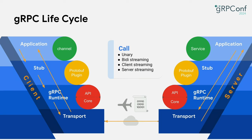Deadline and timeout define when the client is unwilling to wait for a response from a server. The client will receive a DEADLINE_EXCEEDED status code from gRPC. This safeguards against RPCs taking an infinite amount of time, especially in distributed systems where network latency or server issues can cause delays. Deadline can be set from the client side when it starts an RPC. Some languages use the concept of deadline — a specific point in time the RPC cannot go past — while others use timeout, which is the maximum duration to complete an RPC. These two concepts are interchangeable.